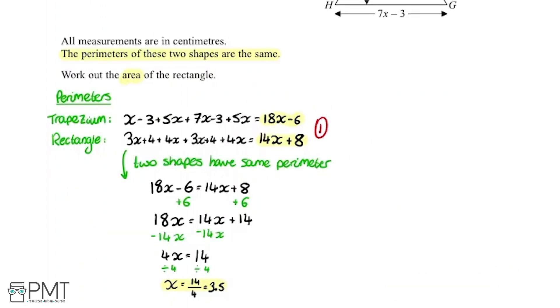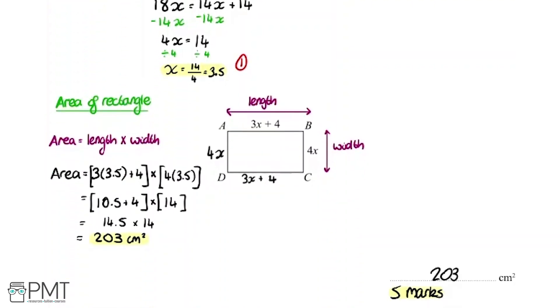So we get the first mark for doing our working to work out the perimeters like this, realizing we have to add up all the sides. We get the second mark here for realizing because the perimeters are the same we can set them both equal to each other. We get a third mark for then solving this equation to get x equals 3.5. We get a fourth mark for starting to work out the area and realizing that we can replace x with 3.5, and we get the last mark for the correct answer of 203.